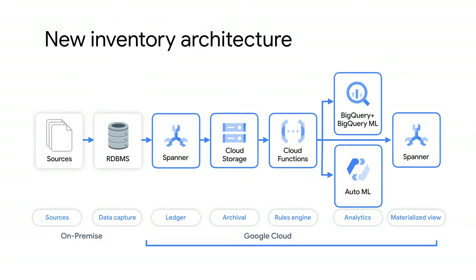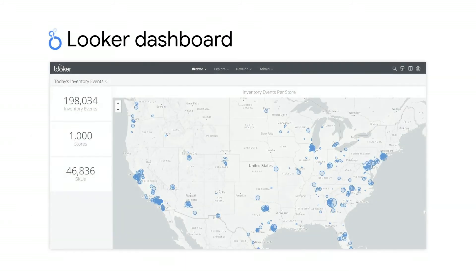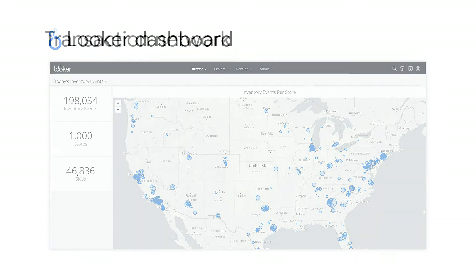What's more, data housed in Spanner is easily available to other Google Cloud services, making it simple for Maxim Modish to leverage capabilities like BigQuery for SQL-based analytics, Looker for modeling and reporting, and AutoML and BigQuery ML to apply machine learning for smarter real-time decision-making. For example, Maxim Modish is able to integrate BigQuery to create Looker dashboards, and conduct further analysis using BigQuery as a managed data warehouse and Looker for interactive visualizations across all stores.